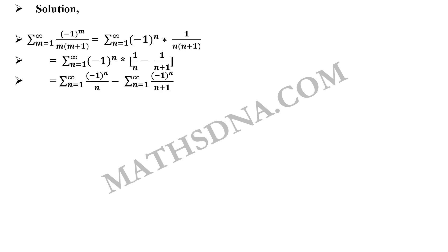Multiplying the summation with both the terms will give us summation n running from 1 to infinity, minus 1 raise to n upon n minus summation n running from 1 to infinity, minus 1 raise to n upon n plus 1.